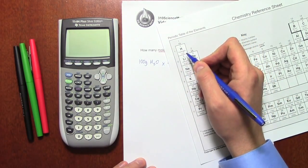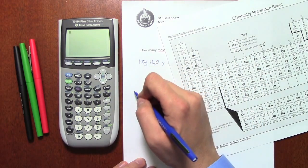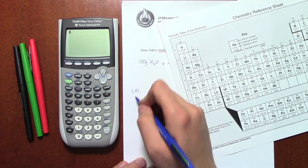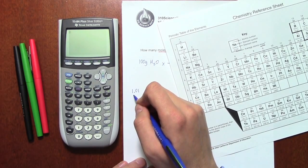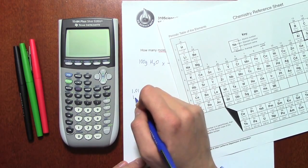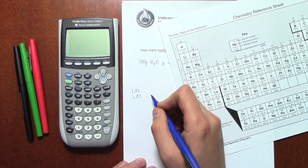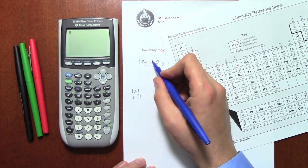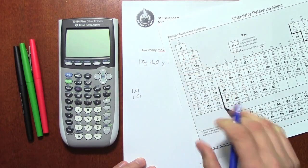So I'm going to look and find hydrogen is right here. It has a mass of 1.01, but I've got two of those. So instead of just writing 1.01, I have to do that twice because I've got two atoms of hydrogen in the formula, H2.